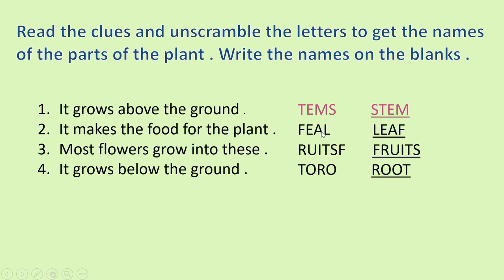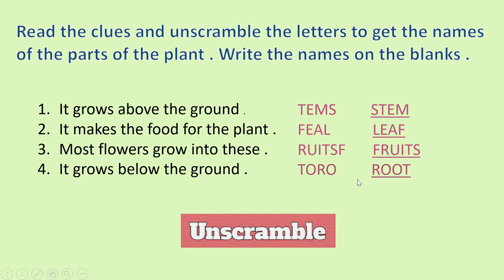Second, it makes the food for the plant. It is called a leaf. Third, most flowers grow into these. These are fruits. It grows below the ground. This is called root. Okay. Done. Now, let's move to next.